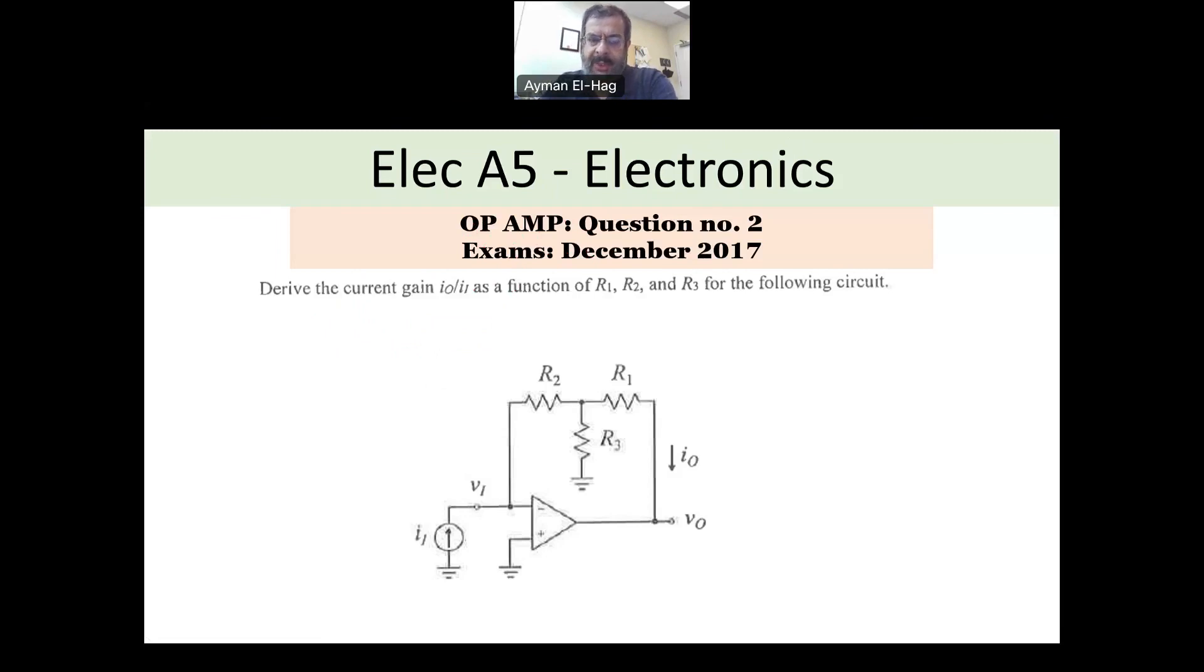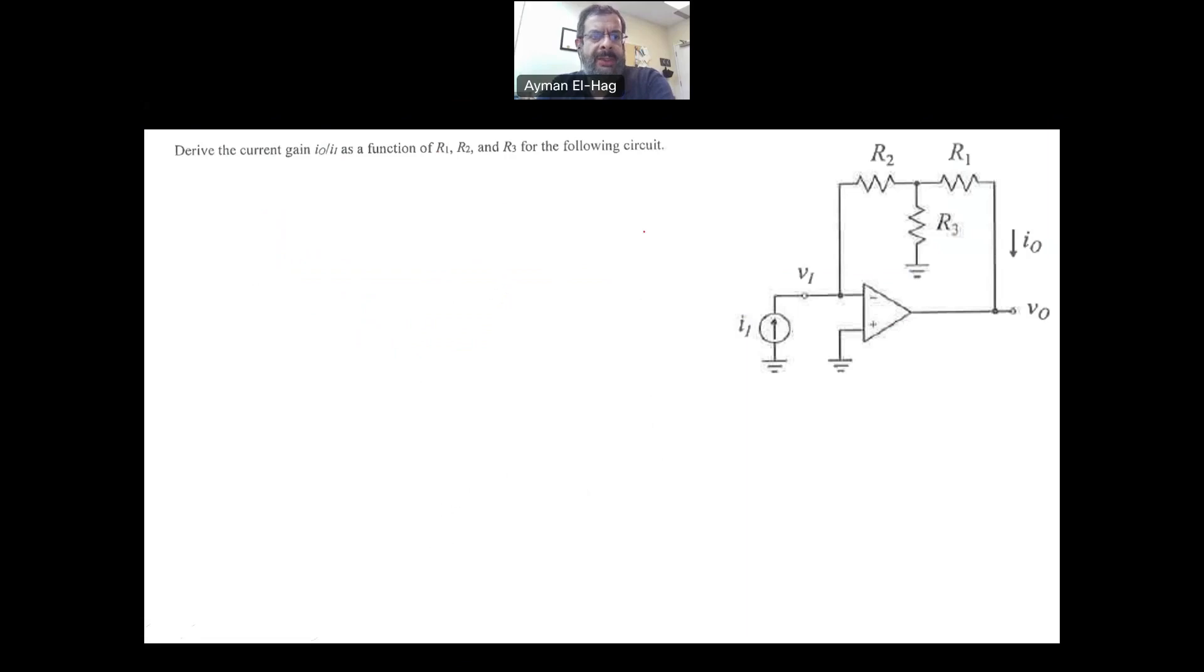Let's see this question. You were asked to find the current gain: what is I_out over I_in as a function of R1, R2, and R3.